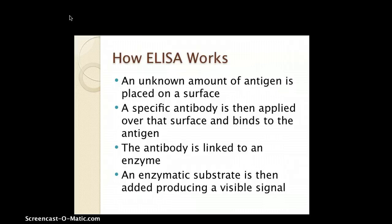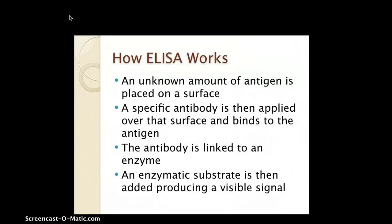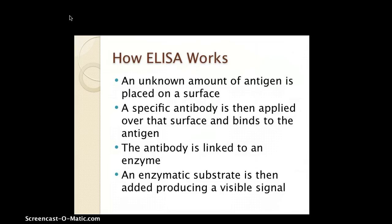How does ELISA work? An unknown amount of antigen is placed on a surface — specifically the suspected protein. After the suspected protein is placed on the surface, a specific antibody is then applied over the surface and binds to the antigen. The antibody is linked to an enzyme. After there's a link between the antibody and the antigen, an enzymatic substrate is added, producing a visible signal — generally a color change. If there's a color change, we suspect the presence of a genetically modified organism; if not, there is none.